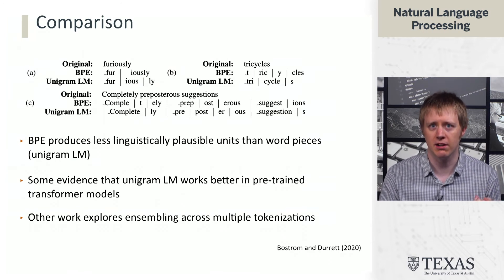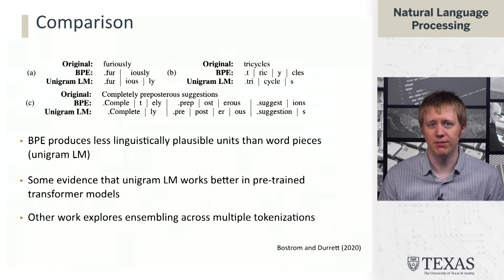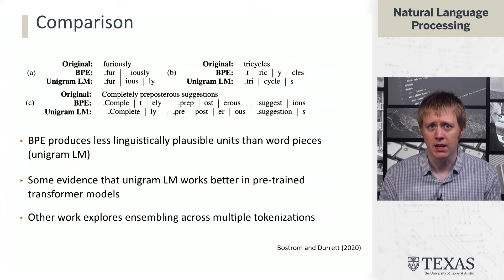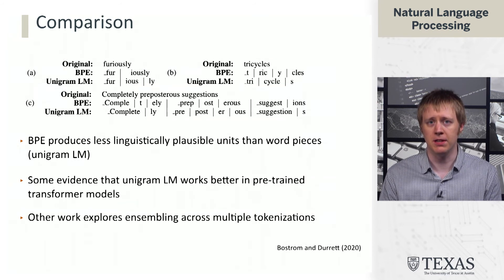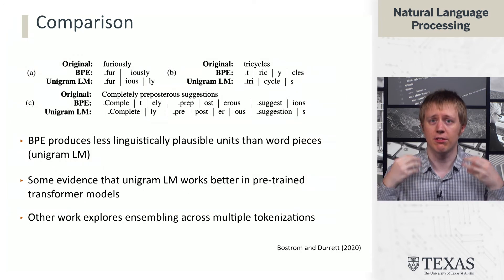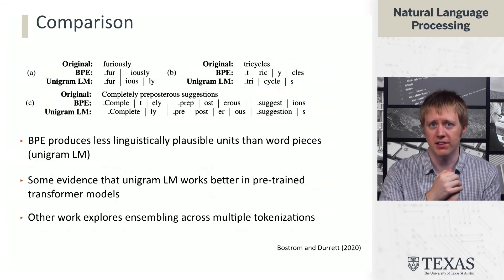For example, in the top right here, 'tricycles' is broken into very natural units — tri, cycle, s — rather than some random segmentation that doesn't correspond to the underlying morphology. This actually matters when we talk later about pre-trained language models like BERT and GPT. These all rely on subword tokenization schemes, and so having the right subword tokenization scheme is very important because it influences your pre-trained model, which will then influence everything that you do based on that model.